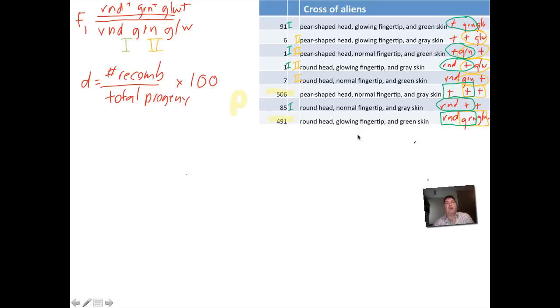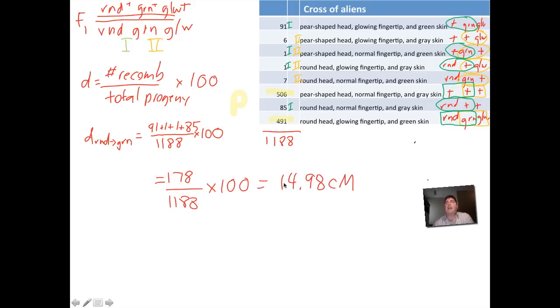Here's the easy part. We just plug these in. When you're told to show your work you should put down a formula so everyone knows how you're figuring out the math. We're just going to put down the total number of recombinants over the total progeny. Here we've got the distance from round to green. I've got 91 which is by that green letter one, with 1 with 1 with 85. 91 to 1 to 1 to 85 times 100, and if you work it out you should get 178 over 1188, and that's 14.98 centimorgans.